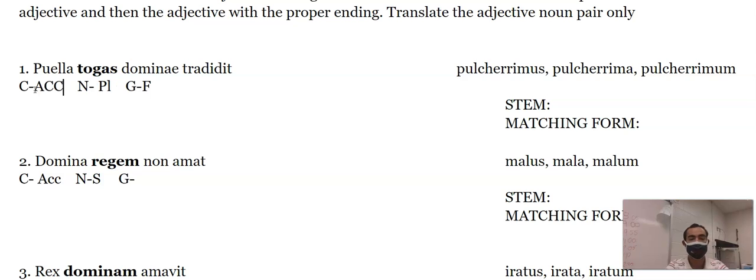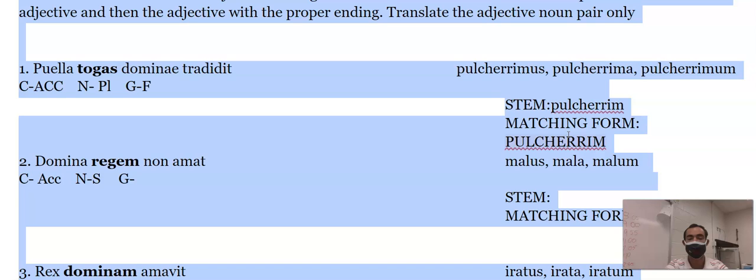And then you'll be making those matching forms. So togas with an as is accusative. It's accusative plural and feminine. So the stem for pulcher, you just take off the a. And then this matching form is pulchras.